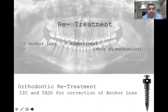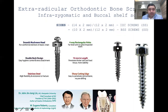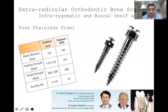A greater number of retreatment cases come to us with anchorage loss in all three dimensions — basically due to poor orthodontics or poor biomechanics. These cases need to be treated with some form of extra-radicular bone screws, which are different from the mini-implants regularly used by us. This is called a bone screw — it is 14 mm x 2 mm in length and diameter, made of stainless steel. They are far more different from the regular small micro-implants available in the market because these stainless steel screws have great rigidity, and therefore provide much more retention during the full arch retraction or distalization process.